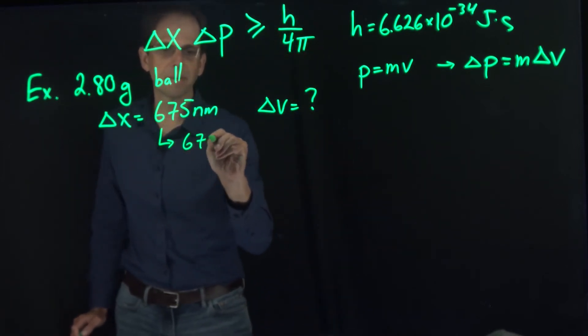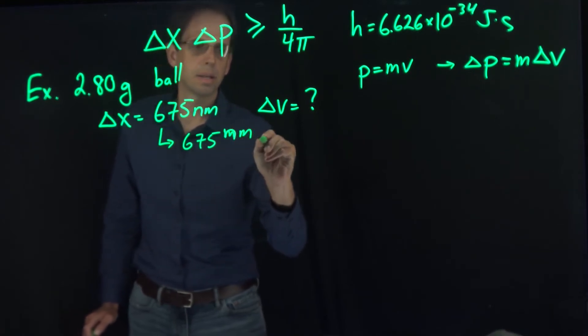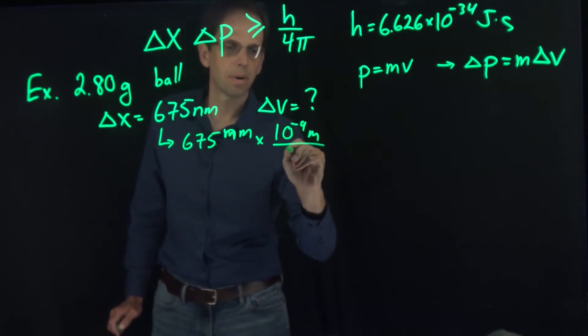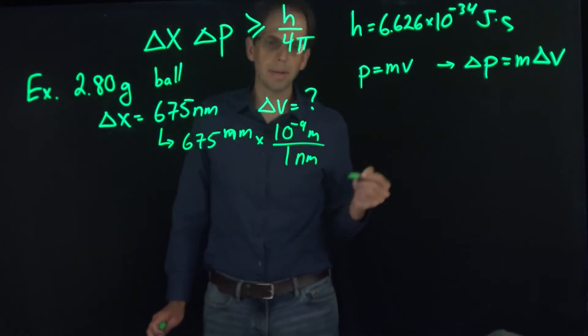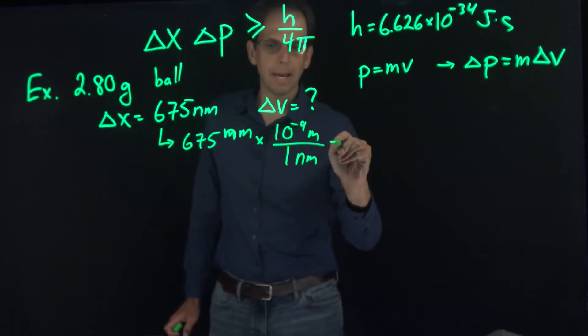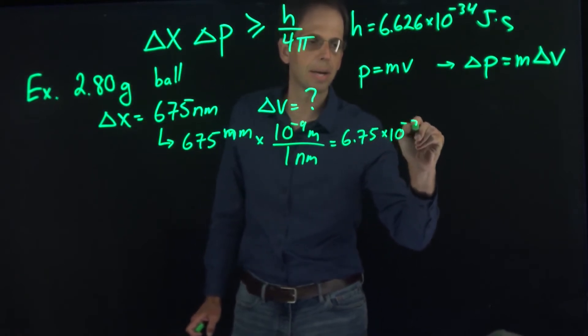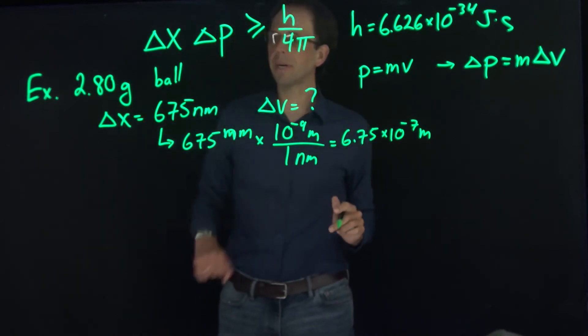For example here, I'm going to do 675 nanometers times 10 to the minus 9 meters over 1 nanometer, because there's 10 to the 9th nanometers in a meter. And so I get 6.75 times 10 to the minus 7 meters for the uncertainty in position.